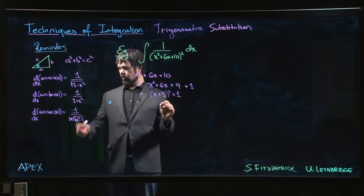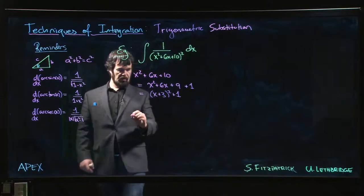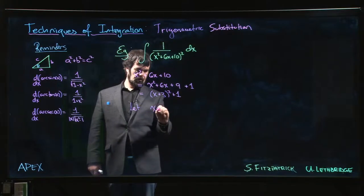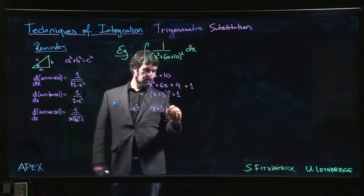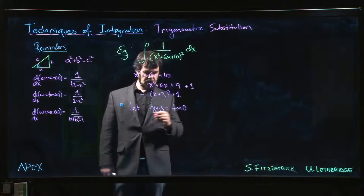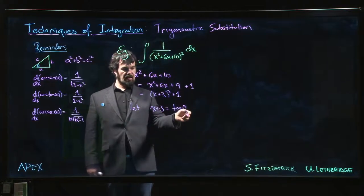Now we have something which looks like the arc tan pattern, so this suggests we should let x plus 3 equal tan theta for some theta.